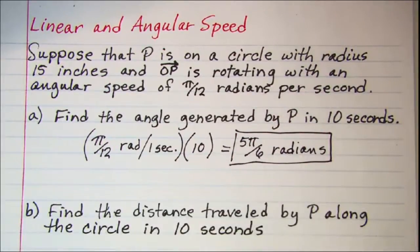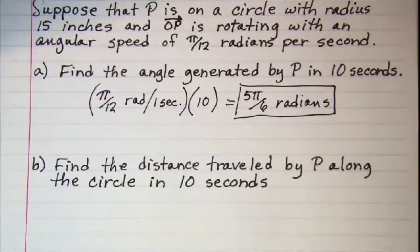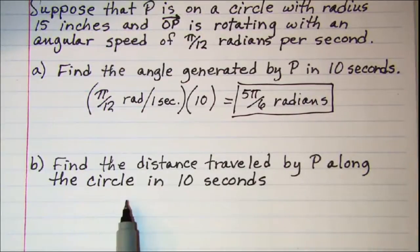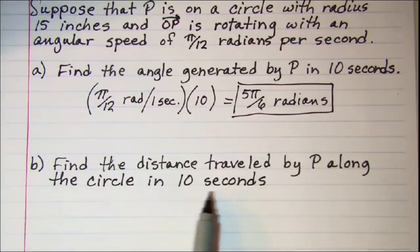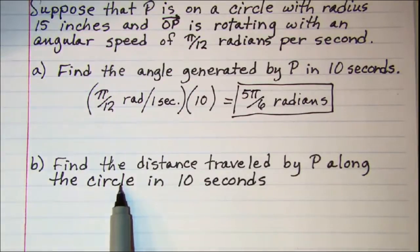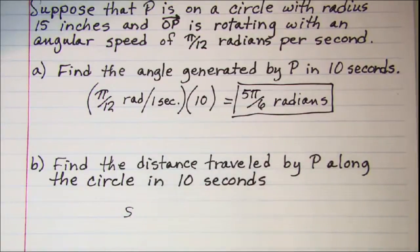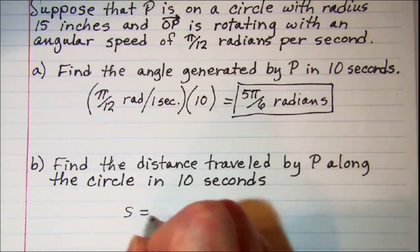Now our next question is find the distance traveled by P along the circle in 10 seconds. So we know that the distance along an arc of a circle is given by S and our formula is S is equal to rθ.